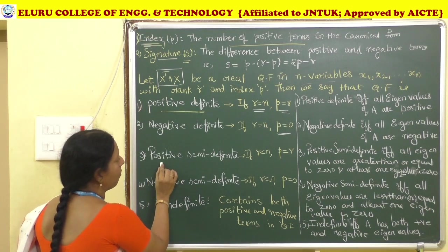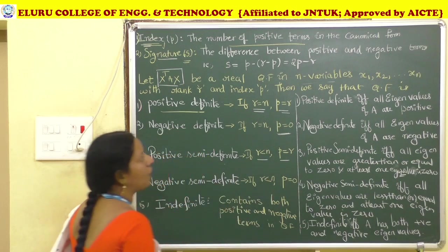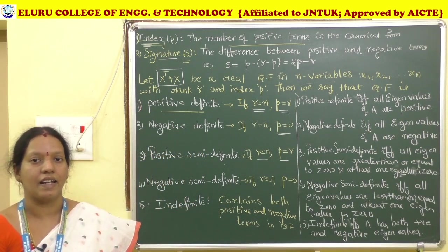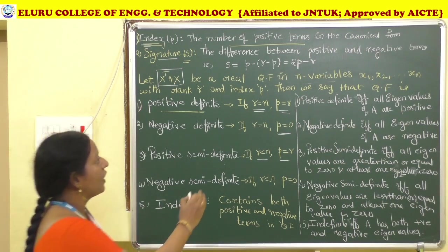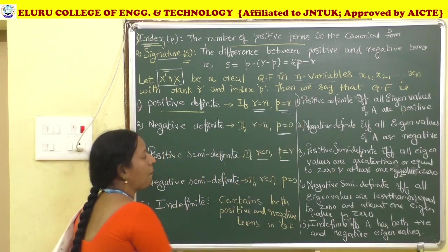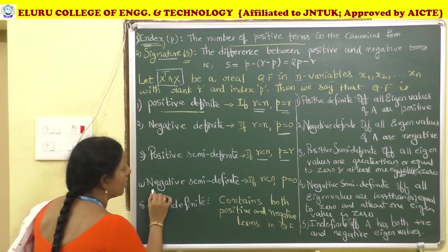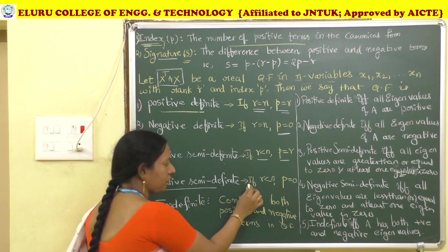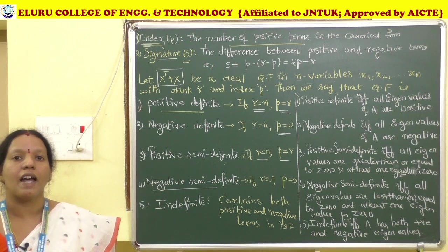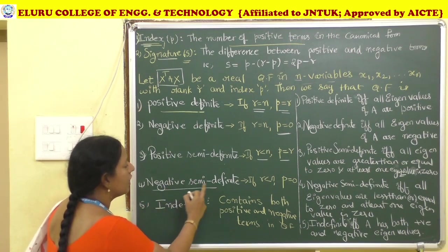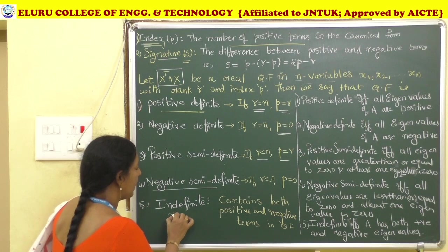Positive semi-definite: if R is less than n and P equals R — that is, the number of non-zero terms is less than n — then the quadratic form is positive semi-definite. Negative semi-definite: if R is less than n and P equals 0, then the quadratic form is negative semi-definite.